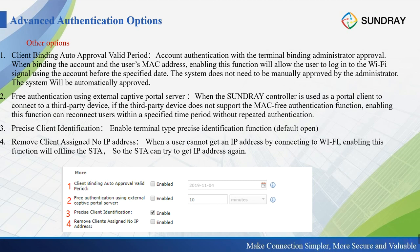The Remove Client with No IP Address option is for wireless service scenarios where a connected device such as an iPhone doesn't have a properly assigned IP address — for example, when the IP was not normally assigned by the DHCP server. The controller will disconnect that station and let it try to obtain an IP address again.